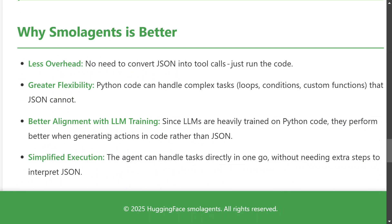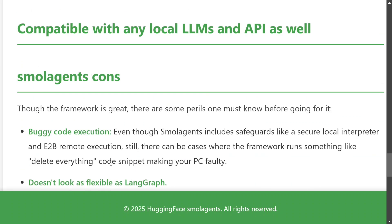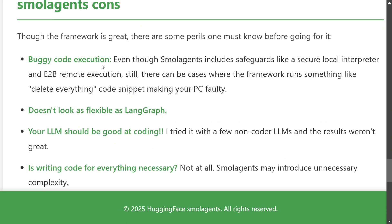Why is Smolagents better? Less overhead — no need to convert things to JSON into multiple tool calls, which leads to excessive complexity. Great flexibility — code is the most flexible thing you can have; Python code can handle complex tasks, loops, conditions, custom functions that JSON simply can't handle. Better alignment with LLM training, since LLMs are heavily trained on Python code — especially if you use a coder LLM. Simplified execution — no JSON involved, just write and execute the code.